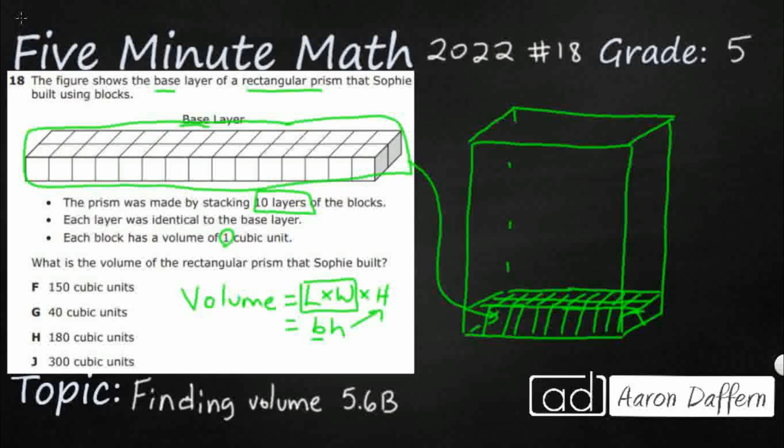So those two just kind of get combined into that letter B for base. It's still the same way we find it. Length times width times height just gets shown a little bit differently.